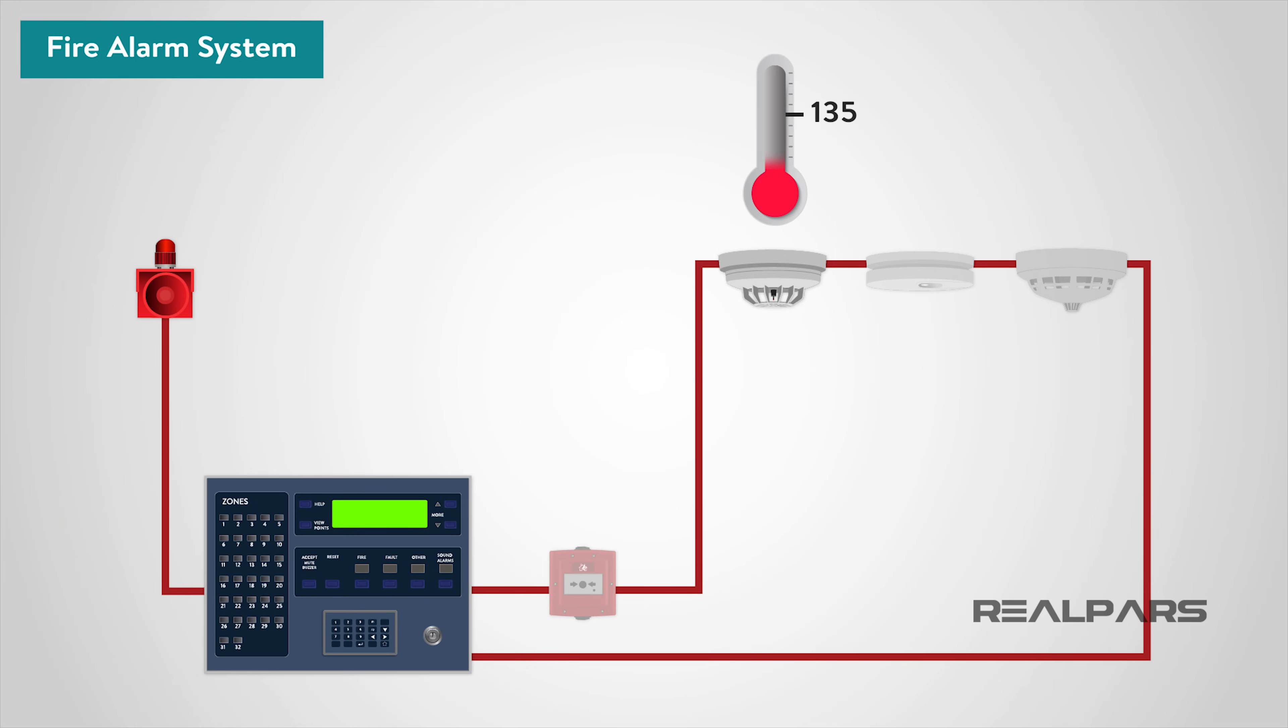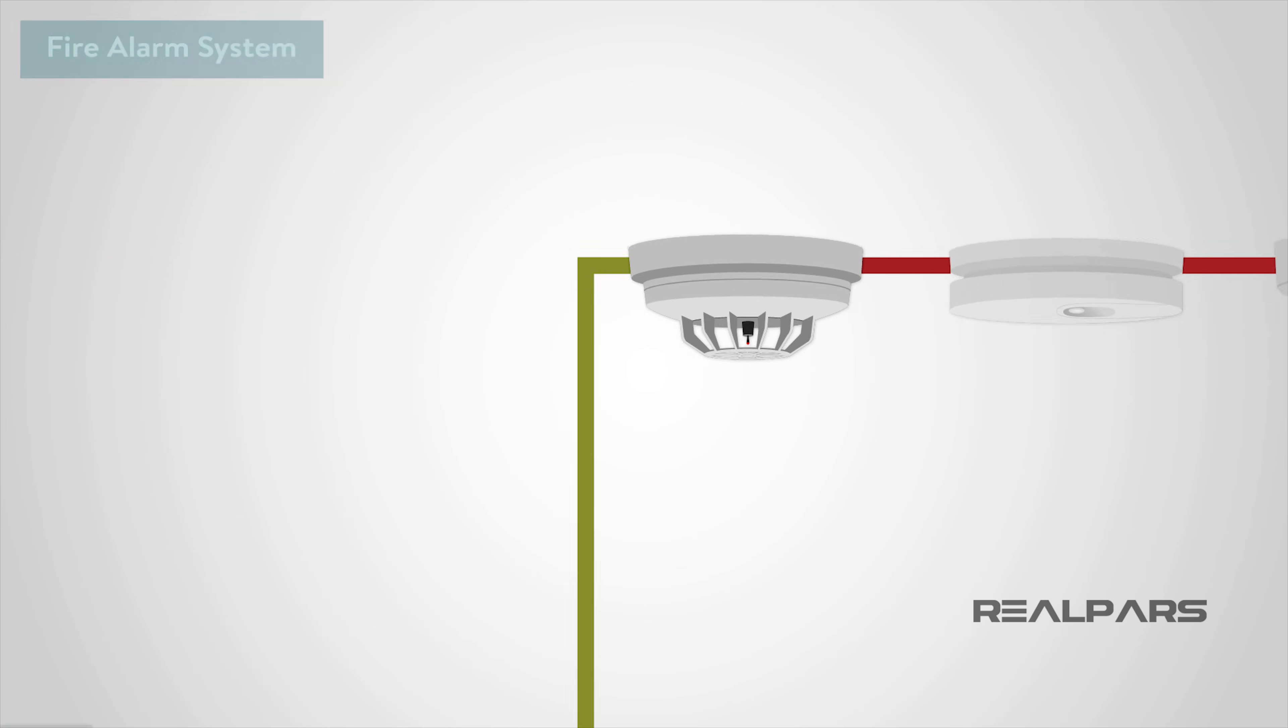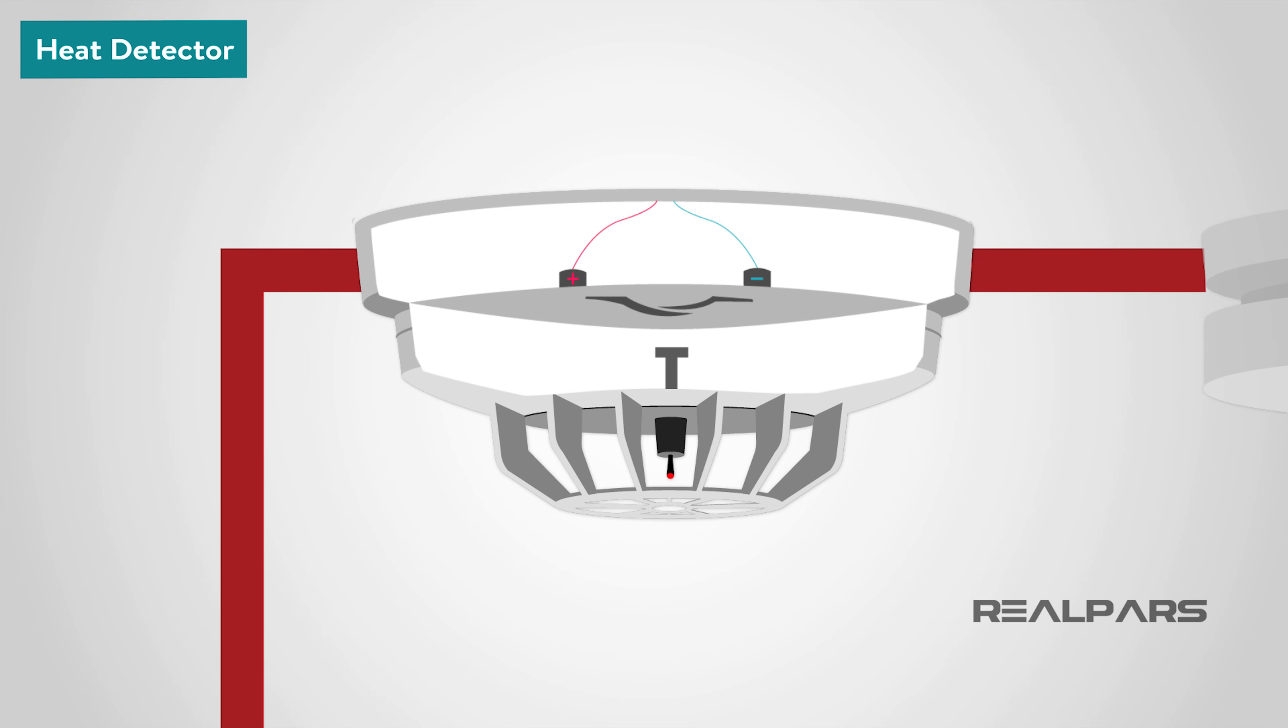A heat detector can either work on a fixed temperature basis, where it will trigger an alarm if the temperature exceeds a preset value, or they can work on the rate of change in temperature. Commonly, heat detectors work in a similar way to an electrical fuse. The detectors contain a eutectic alloy, which is heat sensitive. When a certain temperature is reached, the alloy turns from a solid to a liquid, which in turn triggers the alarm.